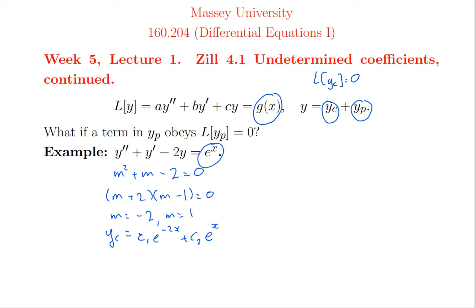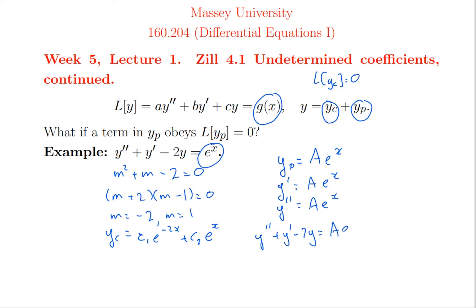Here is the challenging case: normally I would try yp = a·e^x. But substituting gives y' = ae^x, y'' = ae^x, so y'' + y' - 2y = ae^x + ae^x - 2ae^x = 0. That cannot equal the required right hand side e^x. This is not a coincidence — e^x is a solution of the homogeneous equation, so substituting it into the left hand side always gives zero.